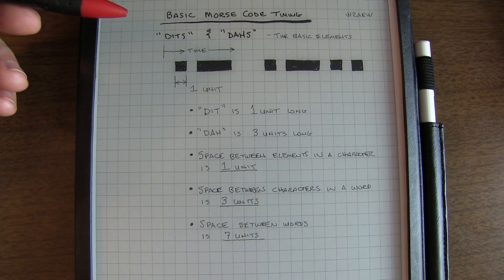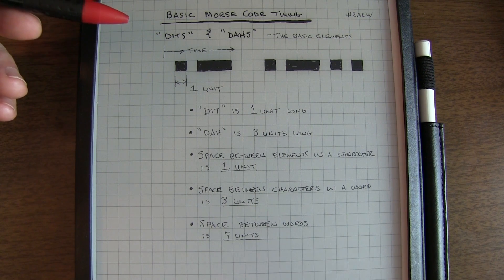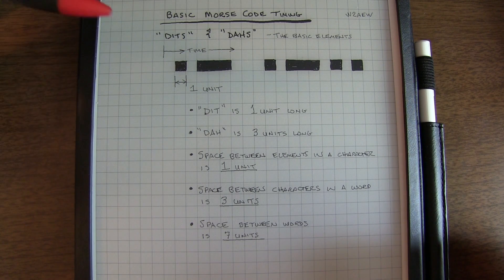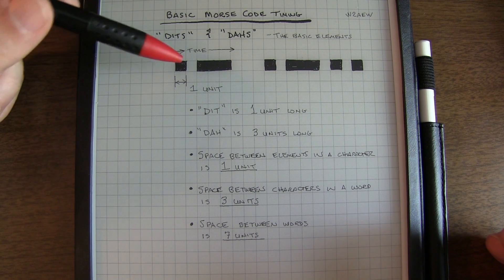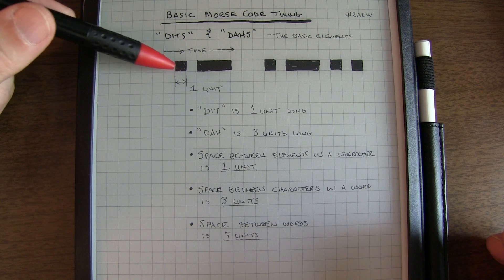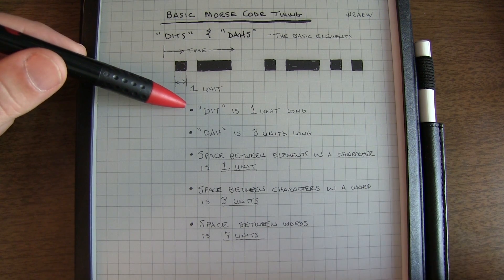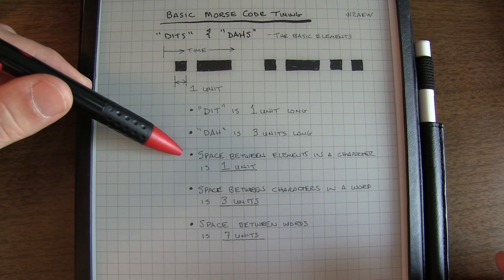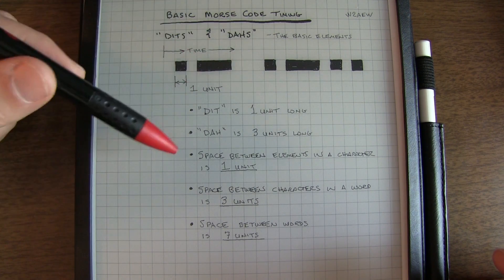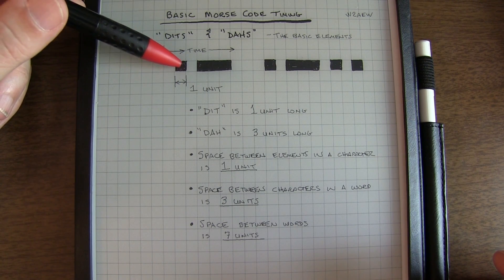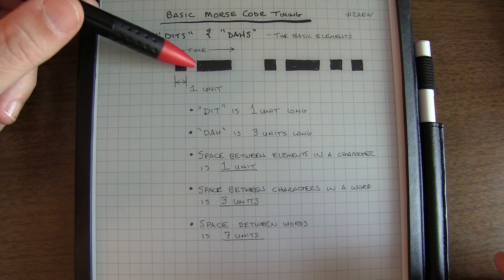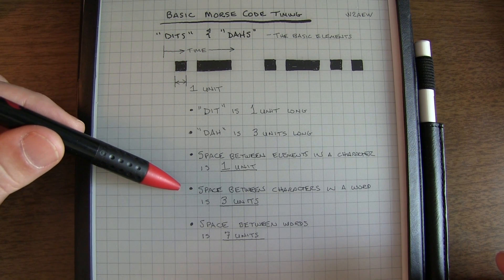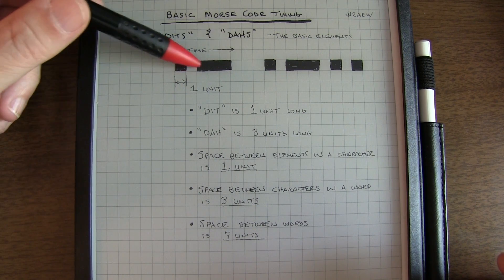Before looking at the keying methods, let's take a look at the basic timing of Morse code. Morse code characters are made up of combinations or patterns of dits and dahs, and the basic timing relationship is that the dah is three times longer than the dit. So if the dit is one unit long in time, the dah is three units long. The space between the elements within a character is one unit. So here for the letter A, I've got a dit, a space, and a dah. That space is the same duration in time as the dit. The space between characters within a word is three units, or the same as a dah.